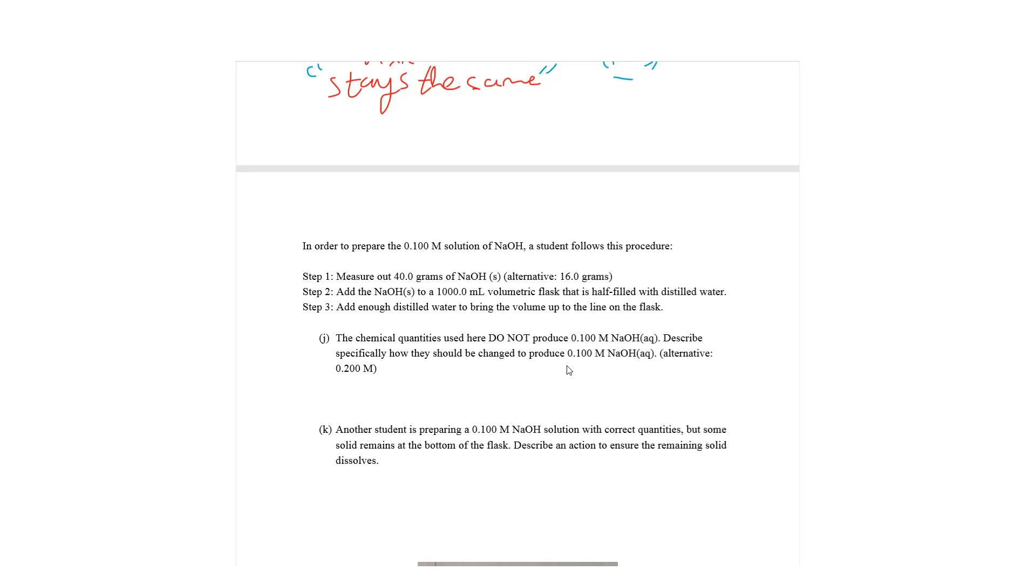Next part says, In order to prepare the 0.1 molar solution of NaOH, a student follows this procedure. Measure out 40 grams of NaOH. Add the NaOH to a 1,000 milliliter volumetric flask that's half filled with distilled water. And step three says, add enough distilled water to bring the volume up to the line on the flask. Part J says, The chemical quantities here do not produce 0.1 molar NaOH. Describe specifically how they can be changed to produce 0.1 molar NaOH. So let's actually calculate what the molarity of the solution would be. So they give you a nice number. The molar mass of NaOH is about 40. So the amount of moles is about 1, and 1,000 milliliters is 1 liter. So that's 1 molar. And we want something that's 0.1 molar. So what we can do is we can cut the mass by a factor of 10. So use mass of 4 grams, not 40.